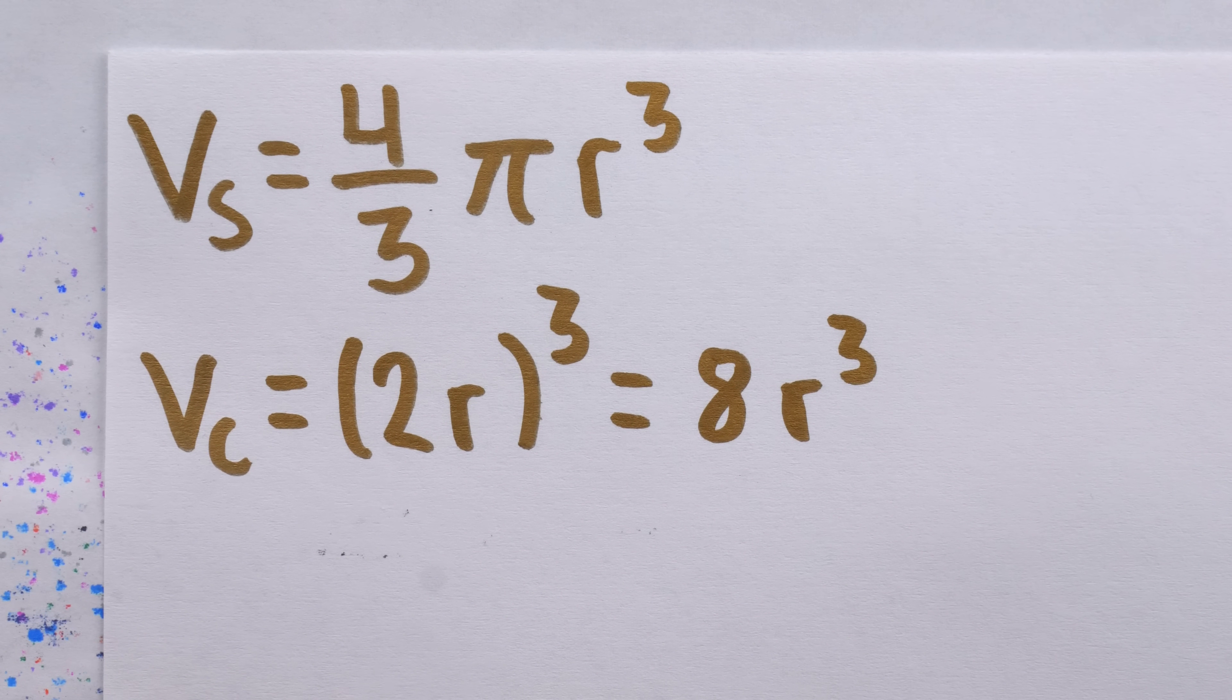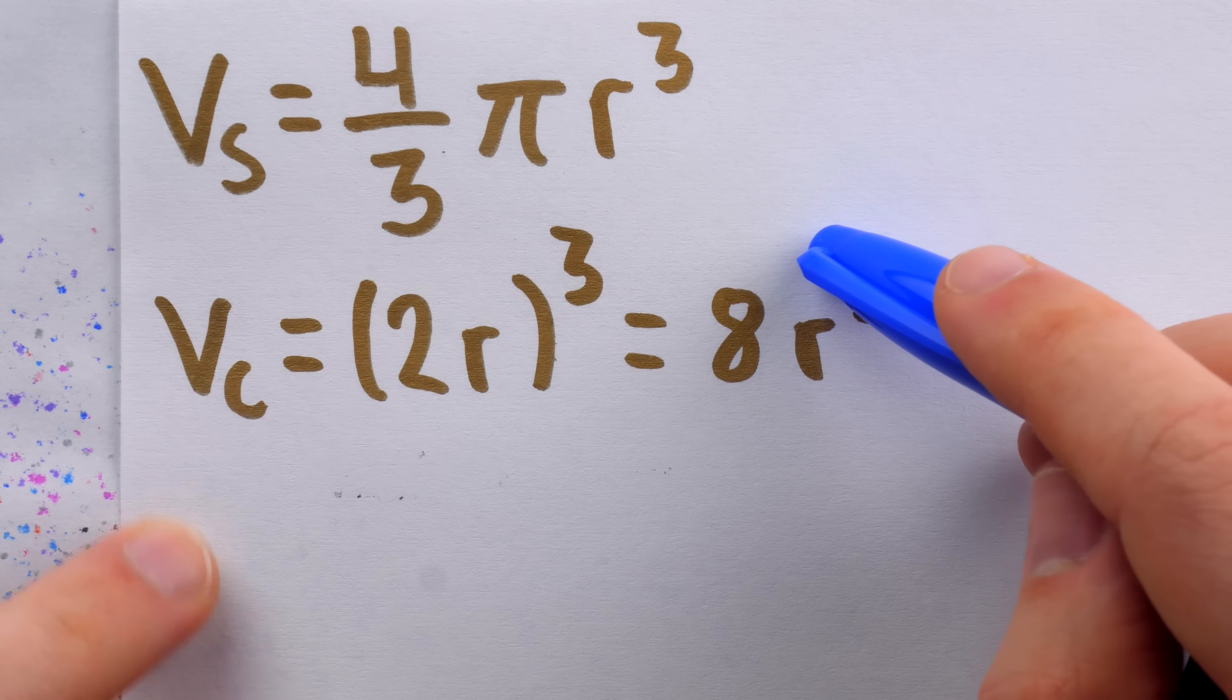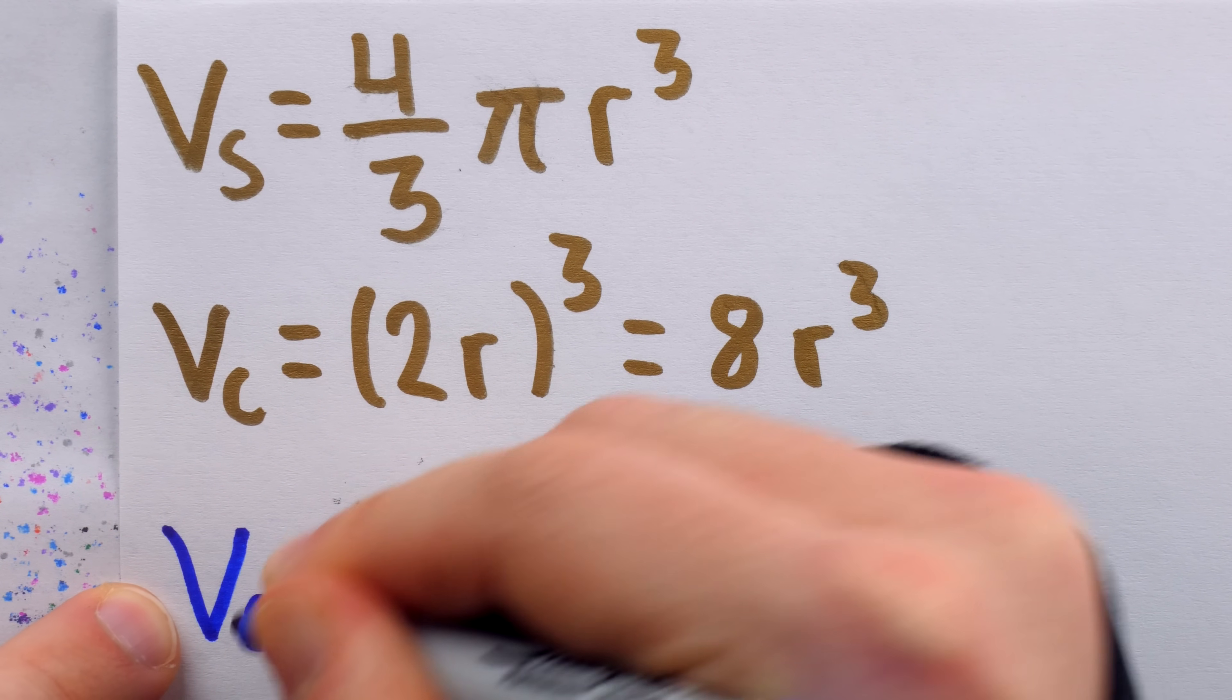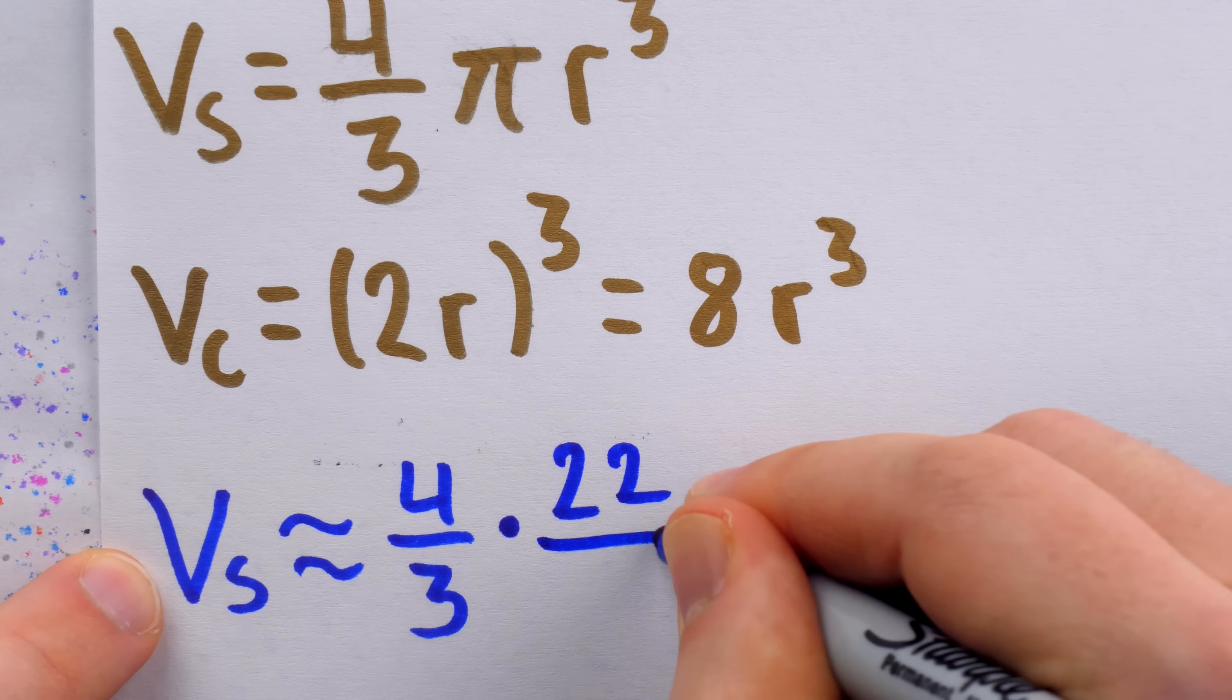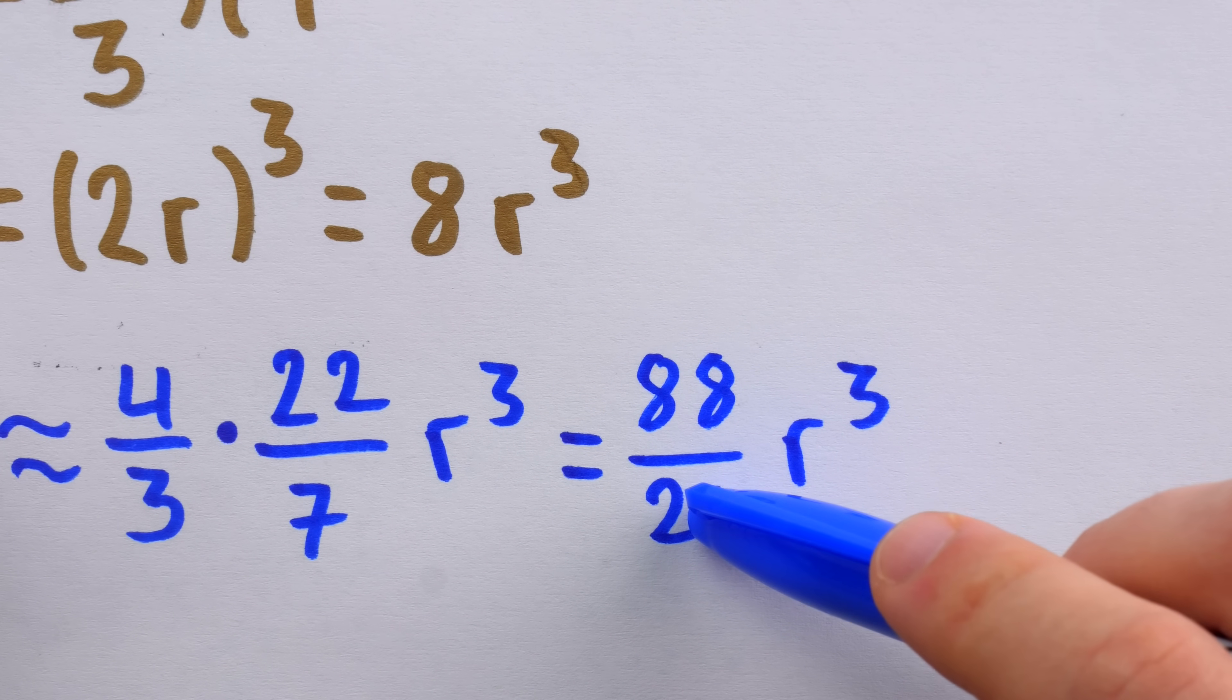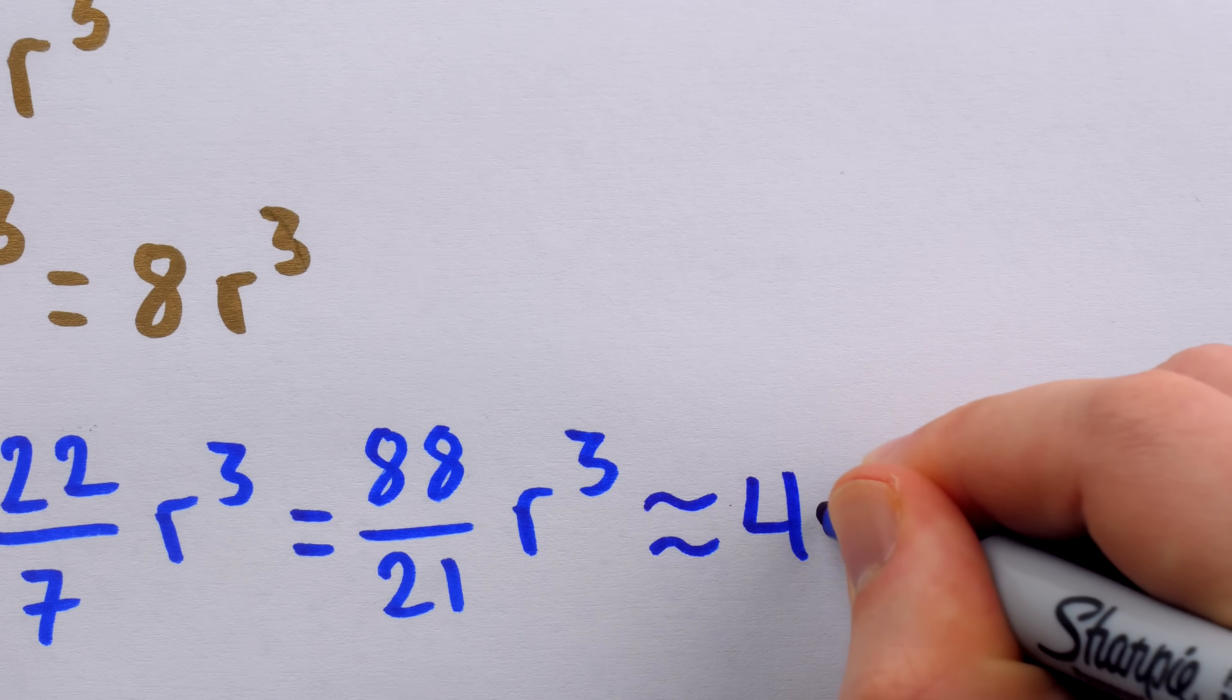This is where the approximation becomes relevant to run a sort of back-of-the-napkin calculation. We're interested in how the volume of the sphere relates to the volume of the cube. We know the volume of the cube is 8 r cubed, and the volume of the sphere is 4 thirds pi r cubed. A well-known approximation for pi is 22 sevenths. So the volume of the sphere is about 4 thirds times 22 sevenths times the radius cubed. It's easy to see that 88 over 21 is a bit bigger than 4, so the volume of the sphere is around 4 r cubed.